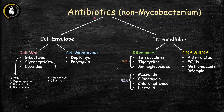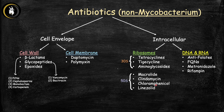Final recap: antibiotics fall into four classes. Cell wall inhibitors: beta-lactams (penicillins, cephalosporins, monobactams, carbapenem), glycopeptides (vancomycin, bacitracin), and epoxides. Cell membrane disruptors: daptomycin and polymyxins. Ribosome inhibitors: 30S — tetracyclines, tigacyclines, and aminoglycosides; 50S — macrolides, clindamycin, chloramphenicol, and linezolid. DNA/RNA disruptors: antifolates, fluoroquinolones, metronidazole, and rifampin.